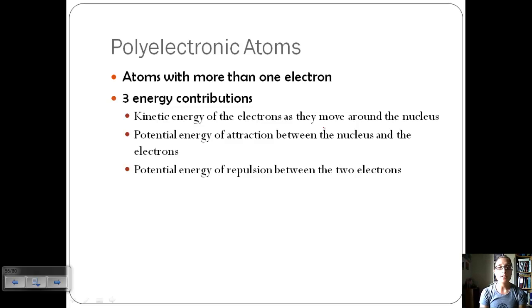First we have the kinetic energy of the electrons as they move around. Then we have the potential energy of the attraction between the nucleus and the electrons. The nucleus contains positive protons, and electrons are negative. They attract. And then our third type of energy is the potential energy of repulsion between two electrons. Electrons don't attract because they're both negative.